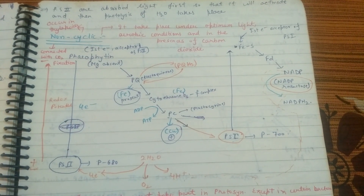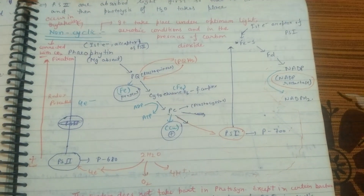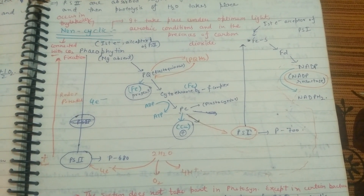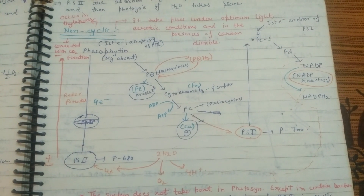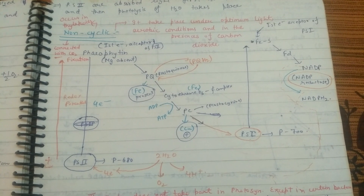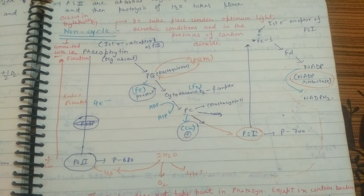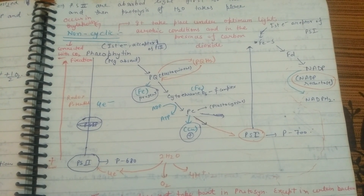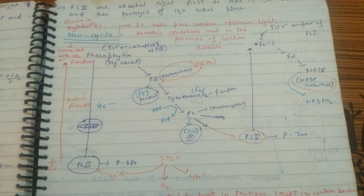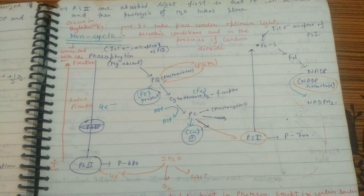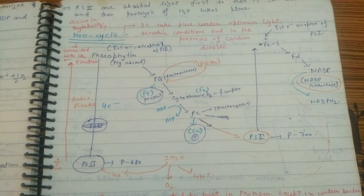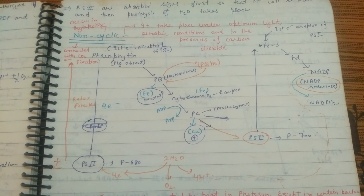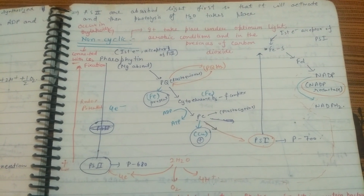Hello friends, welcome again. Today in this video I'm going to talk about the process of photophosphorylation. As the name suggests, this reaction is occurring in the presence of light, and this is mainly the process where the assimilatory powers are generated — ATP and NADPH. This term was given by Arnon, who gave the term for the assimilatory power, that is ATP and NADPH.